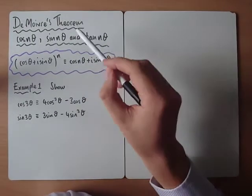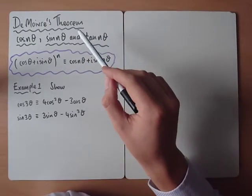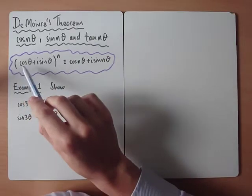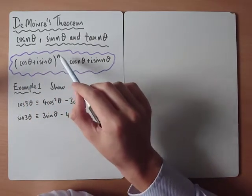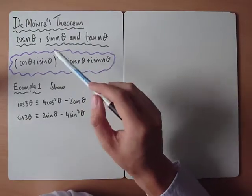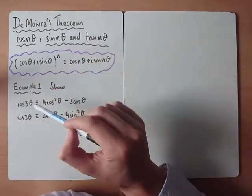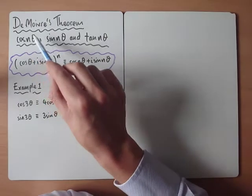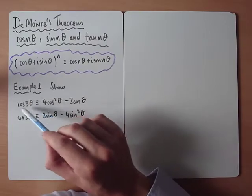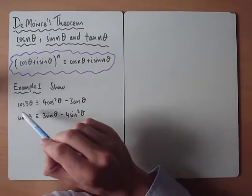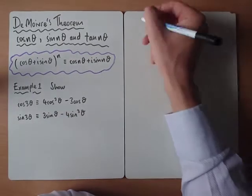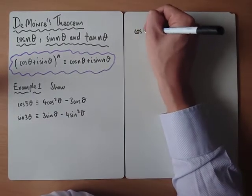Let's look at one of the main applications of De Moivre's theorem in terms of exam-style questions. We know that De Moivre's theorem tells us that (cosθ + i sinθ)ⁿ is equivalent to cos nθ + i sin nθ. What we're going to look at in this video is how to work out expressions for cos nθ or sin nθ. We're going to start with cos 3θ and sin 3θ. If asked to find an expression for cos 3θ, one way would be to write it as cos(2θ + θ).